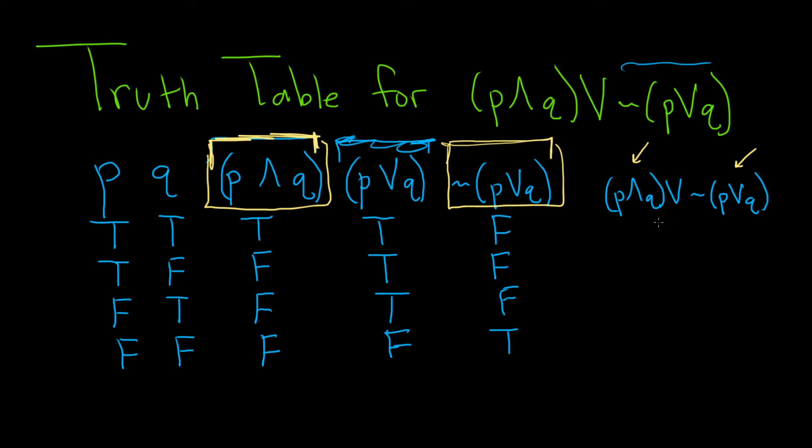So it's true if at least one of them is true. So let's see, so true, false. So at least one of them is true, so it is true. Then we have false, false. So they're both false, so it's false. That's the only time the or is false.